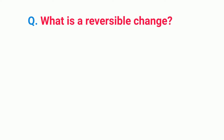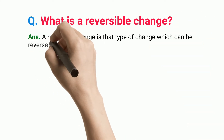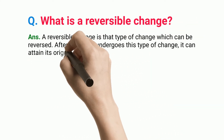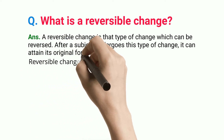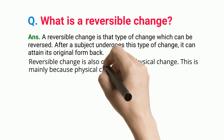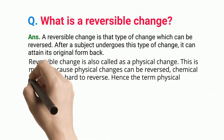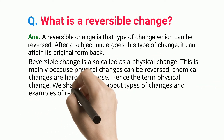What is a reversible change? A reversible change is that type of change which can be reversed. After a subject undergoes this type of change, it can attain its original form back. Reversible change is also called a physical change. This is mainly because physical changes can be reversed, whereas chemical changes are hard to reverse. Hence the term physical change.